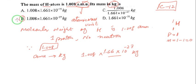The right option is option number B: 1.008 multiply by 1.661 multiply by 10 to the power minus 27 kg. Thanks for watching and stay connected with I Am Chemist for more videos.